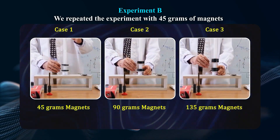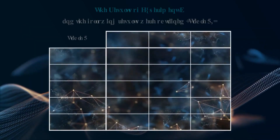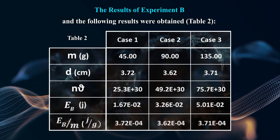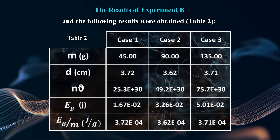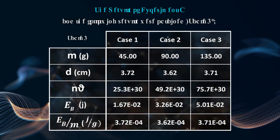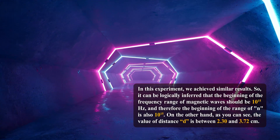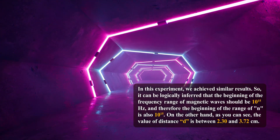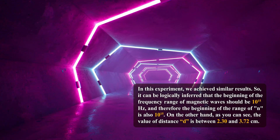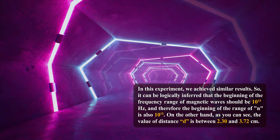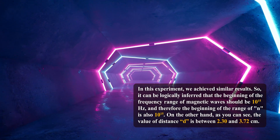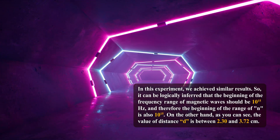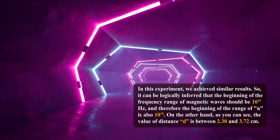We repeated the experiment with 45 grams of magnets and the following results were obtained. In this experiment, we achieved similar results. It can be logically inferred that the beginning of the frequency range of magnetic waves should be 10 to the power of 15 Hz, and therefore the beginning of the range of N is also 10 to the power of 15. The value of distance d is between 2.30 and 3.72 cm.